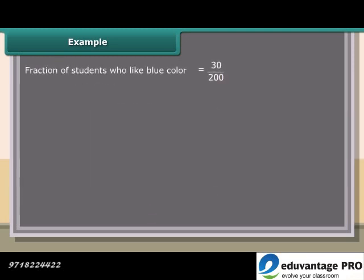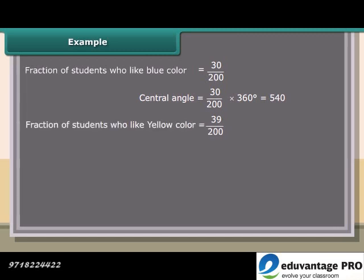Fraction of students who like blue color is equal to 30 upon 200. Central angle is equal to 30 upon 200 times 360 degrees, which is equal to 54.0. Fraction of students who like yellow color is equal to 39 upon 200. Now central angle is equal to 39 upon 200 times 360 degrees, which is equal to 70.20.